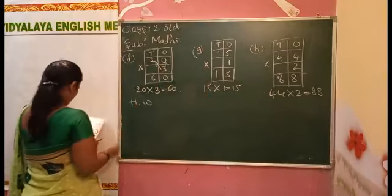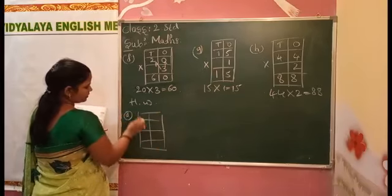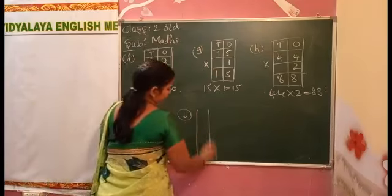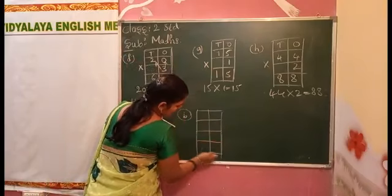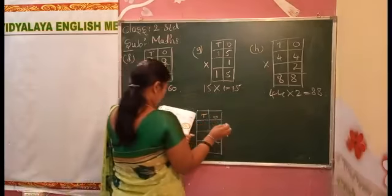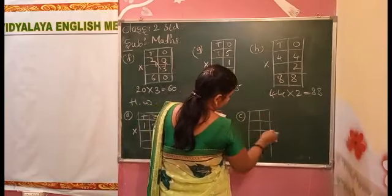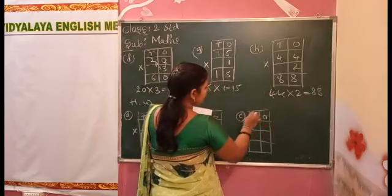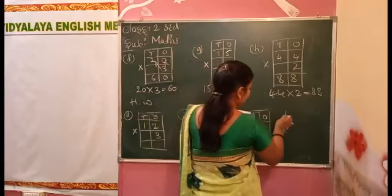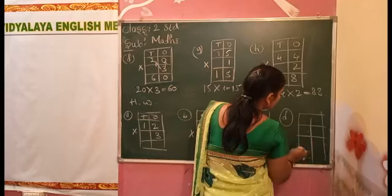Quickly copy in your fair book and write down today's homework. First one or A, you have to solve this. Ones, tens: twelve by three. B.